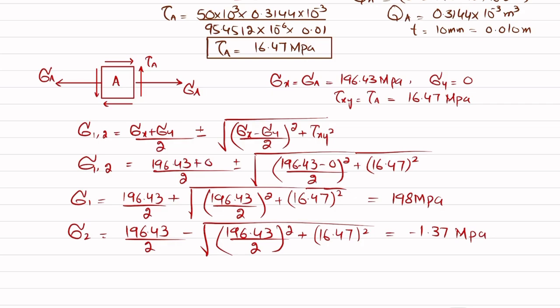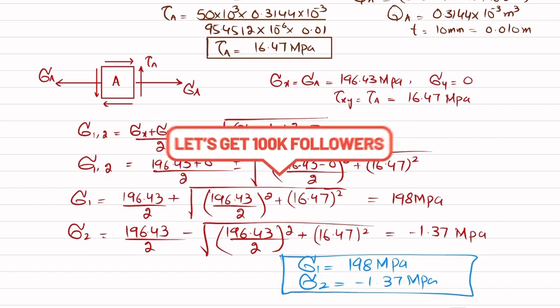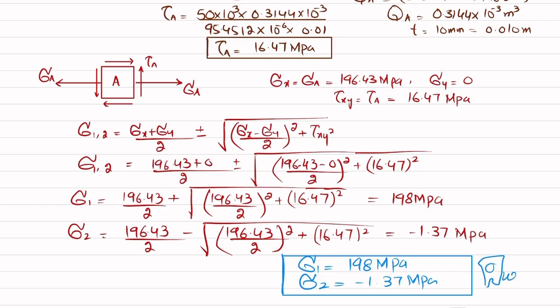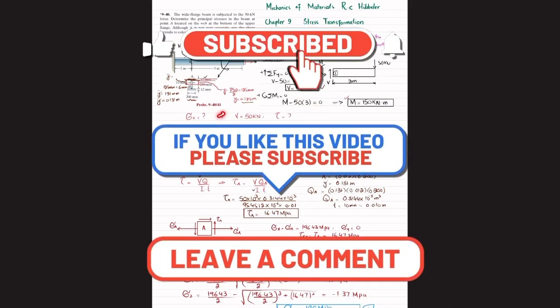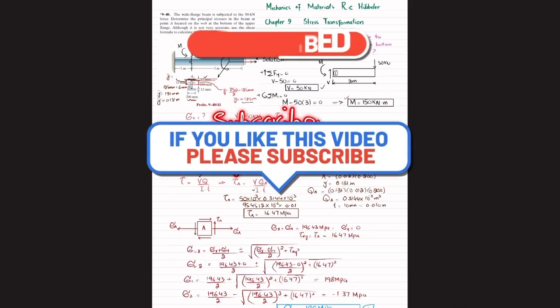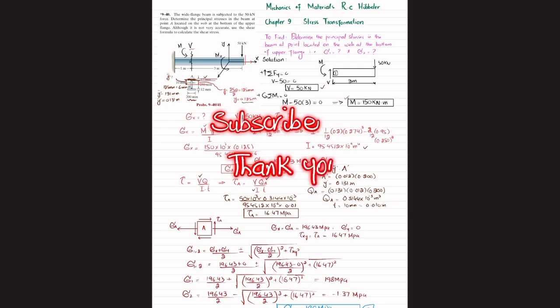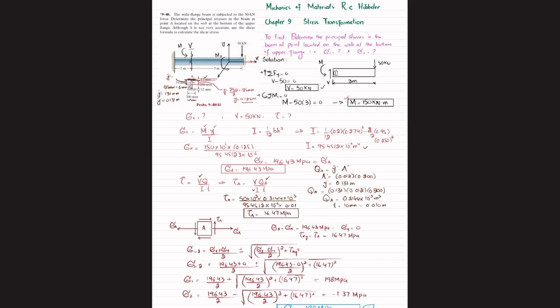To summarize, we have calculated the principal stresses at point A: sigma_1 = 198 MPa and sigma_2 = −1.37 MPa. That was all for problem 9-40. I hope you enjoyed and learned from this video. If you are new to my channel, please subscribe and press the bell icon for notifications. Also try problem 9-41, which is exactly the same but finds principal stresses at point B — my next video will cover that.